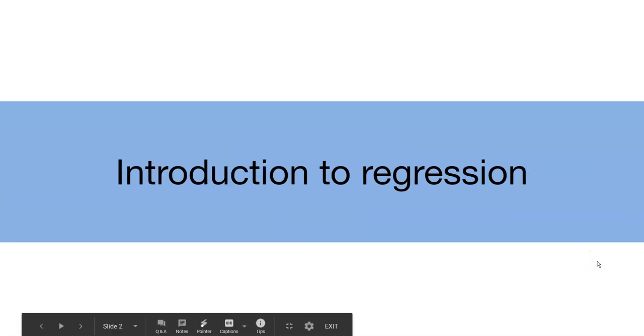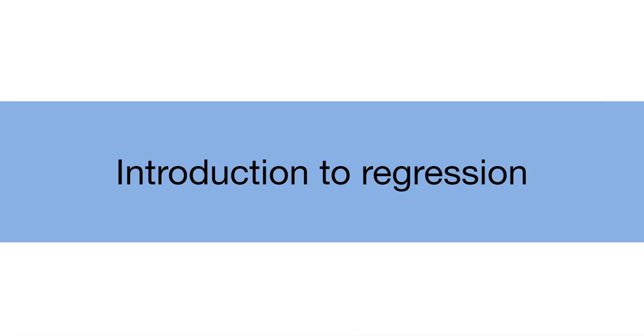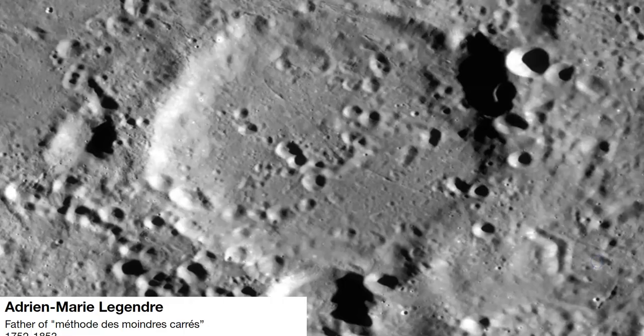First, a little bit of background on regression. Historically, the father of the method of least squares was Adrienne-Marie Legendre. This person was a mathematician, but he pioneered many concepts in regression. Actually, there is a crater on the moon that is named after him.